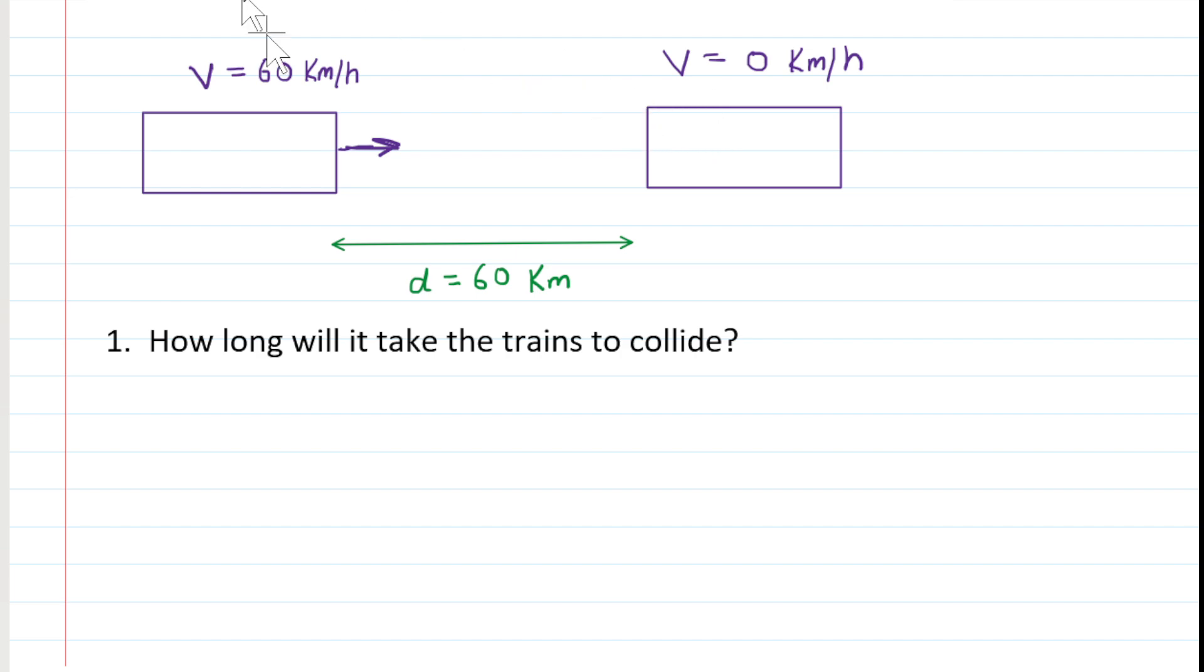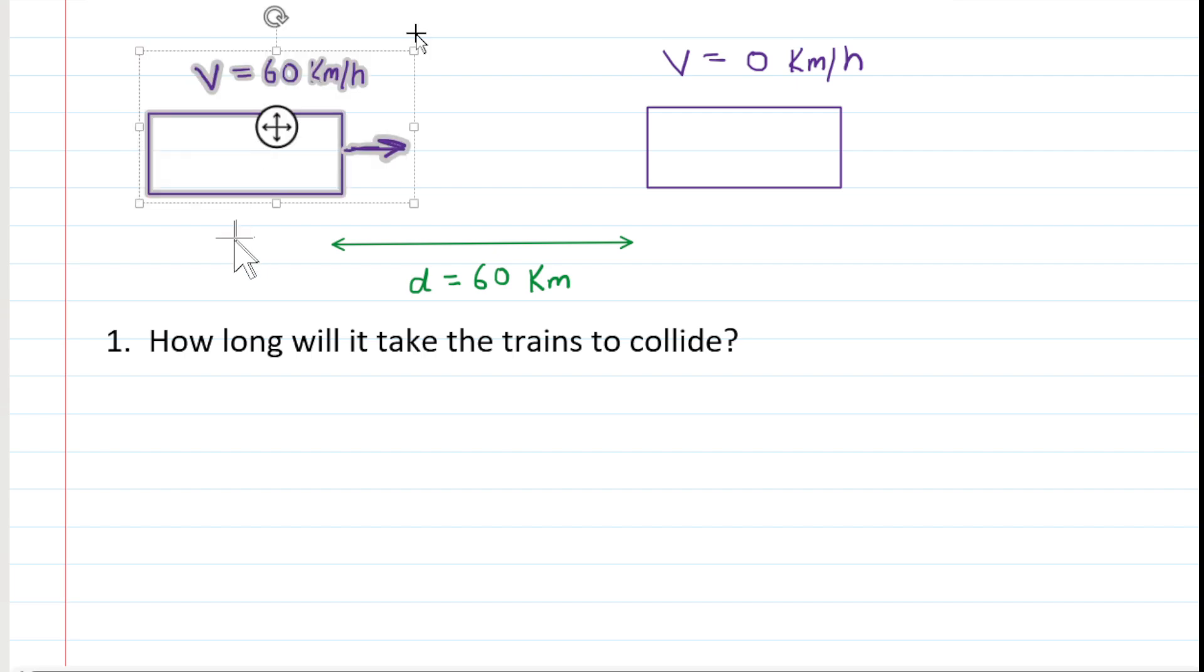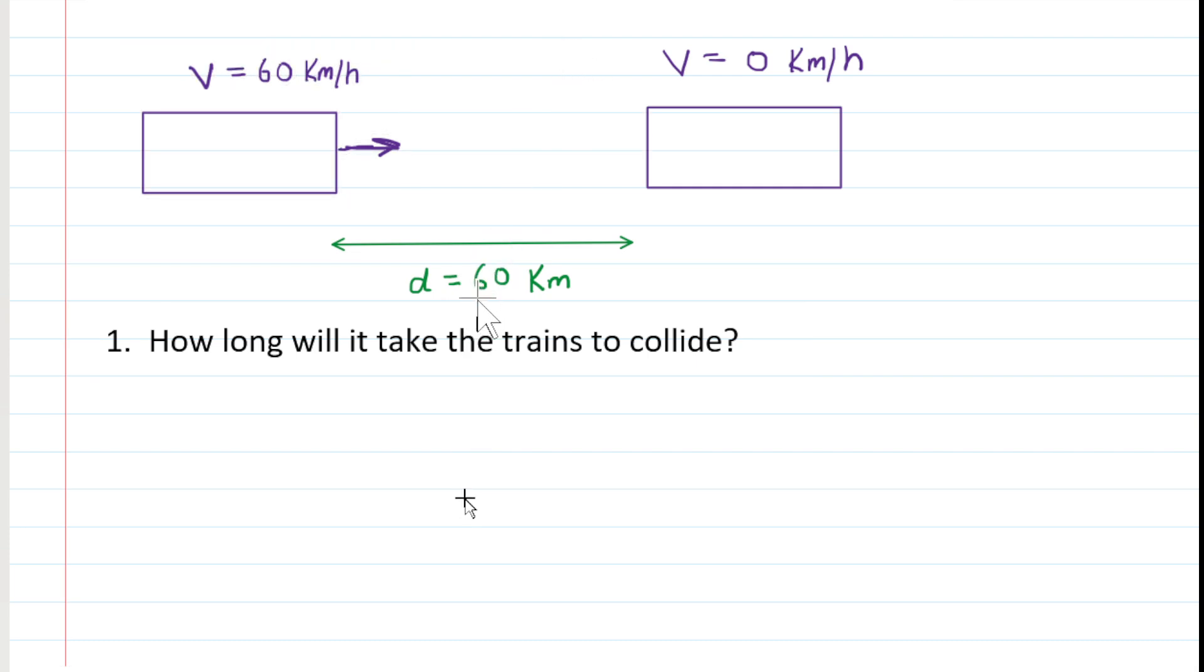Now, maybe you can intuitively see that it would take just one hour. Because remember, this train that's moving 60 kilometers per hour is going to travel 60 kilometers and smack into that train in a time span of one hour. That's what 60 kilometers per hour means. It means it travels 60 kilometers in one hour. Now, they happen to be separated by 60 kilometers. So if your numbers are different, then in order to find the time,